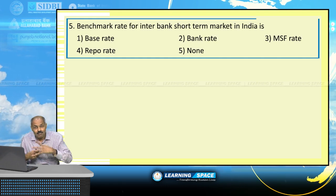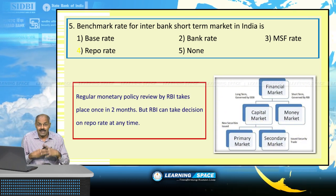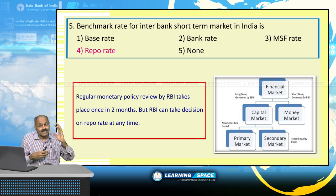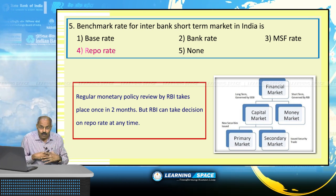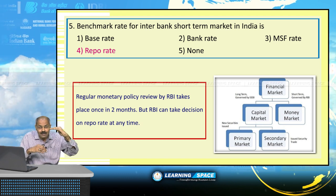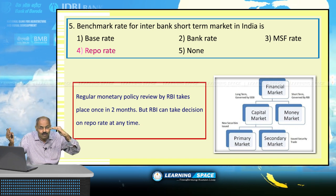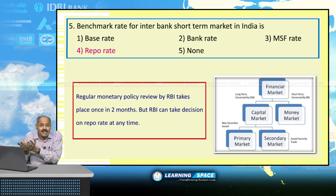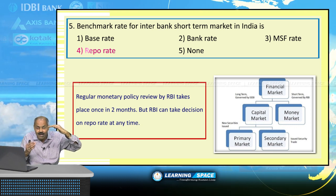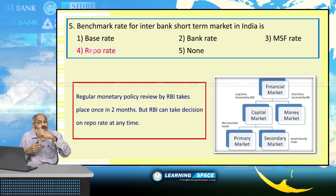The benchmark rate for the interbank short-term market is repo rate. RBI announces interest rates under repo once in 2 months. Based on the repo rate, other call market rates or call money rates in the market will vary. All short-term borrowings in the entire financial system depend on the repo rate announced by the governor of Reserve Bank of India once in 2 months.